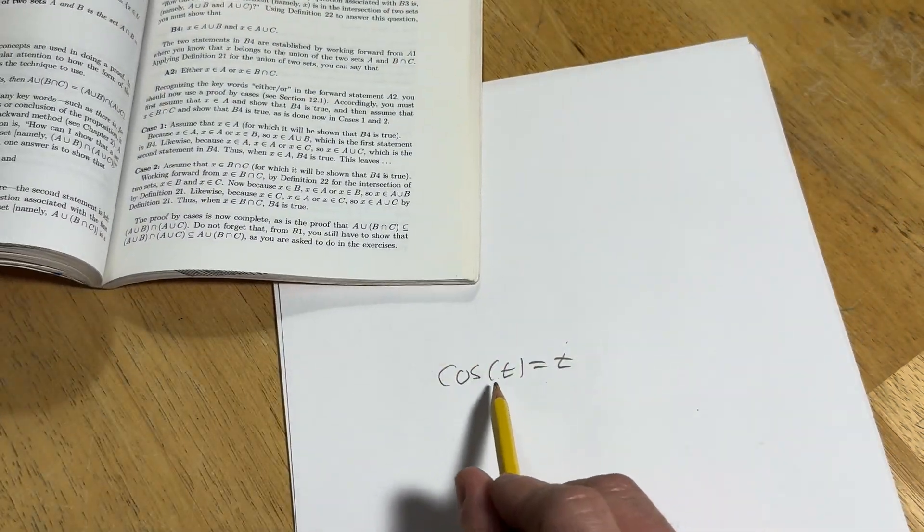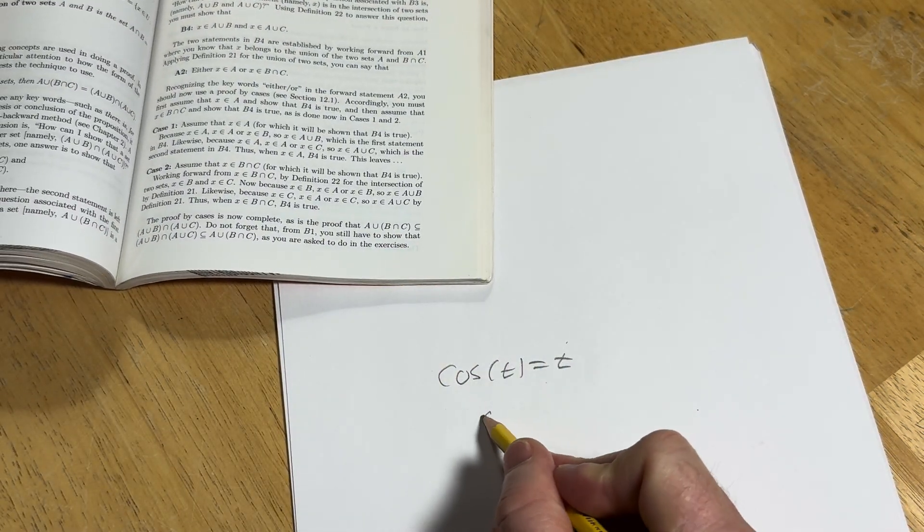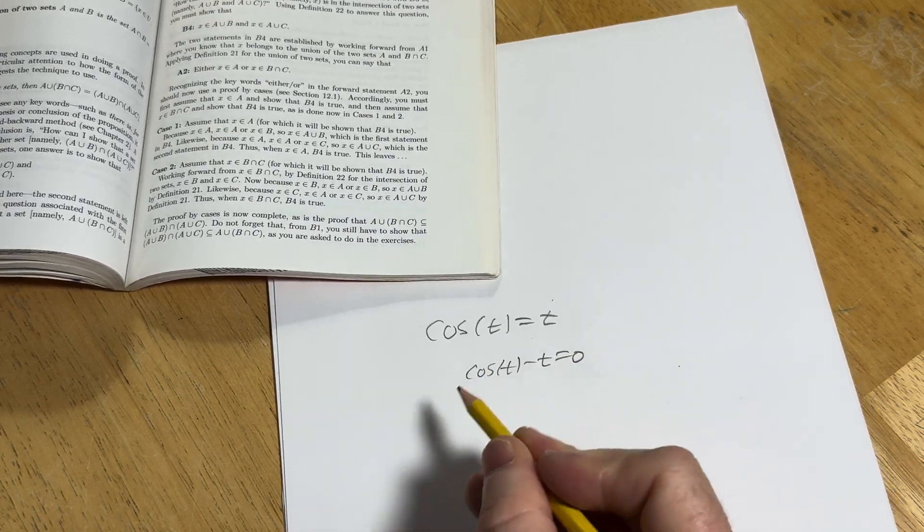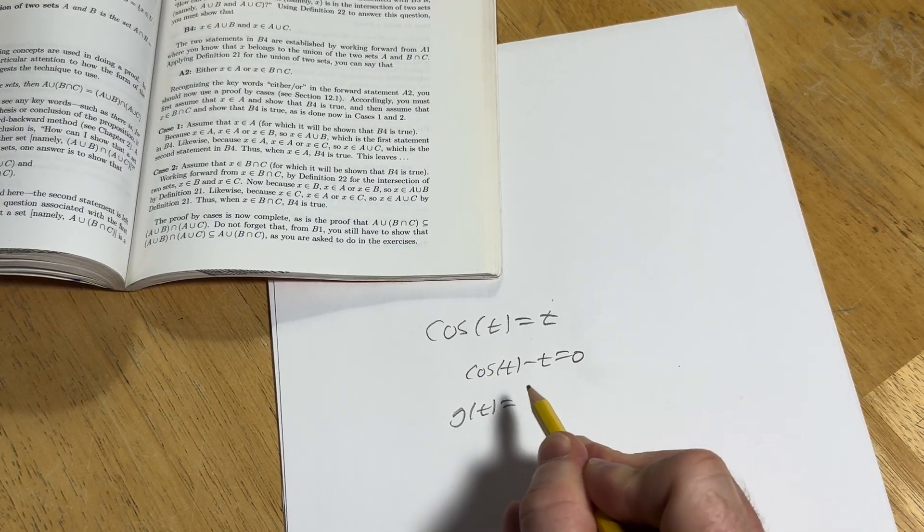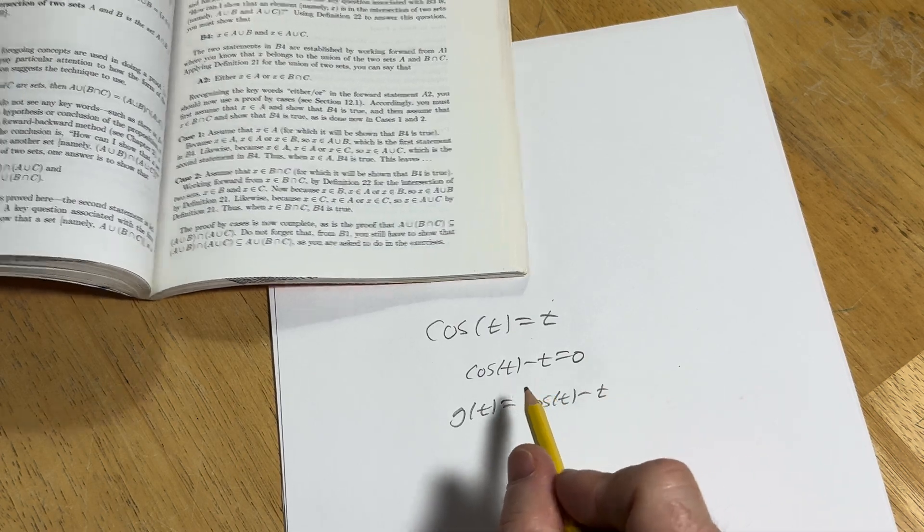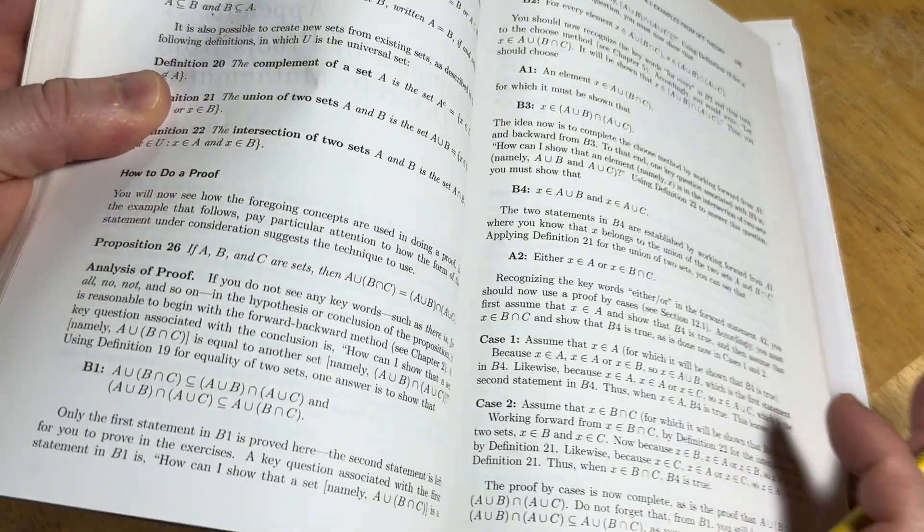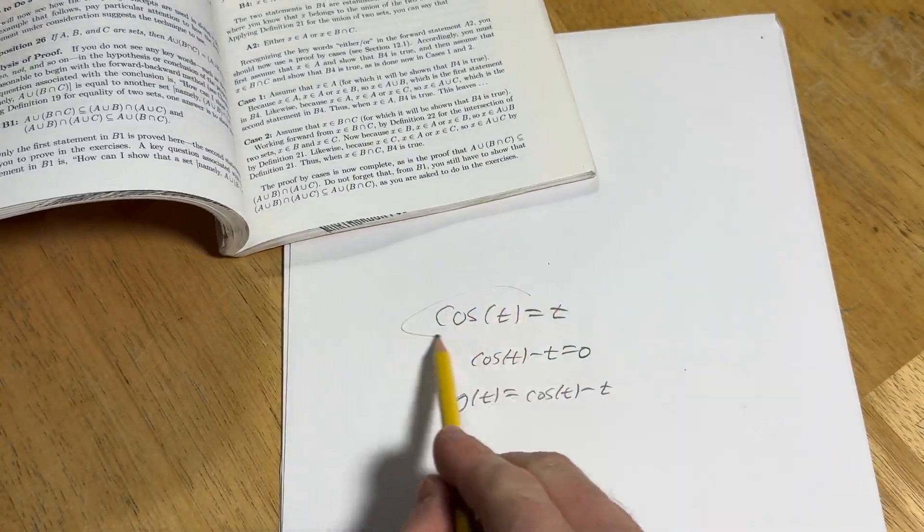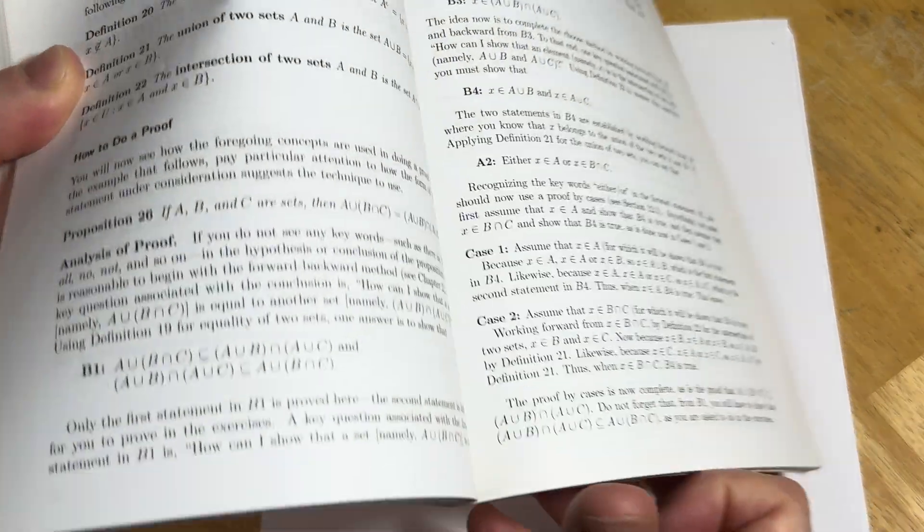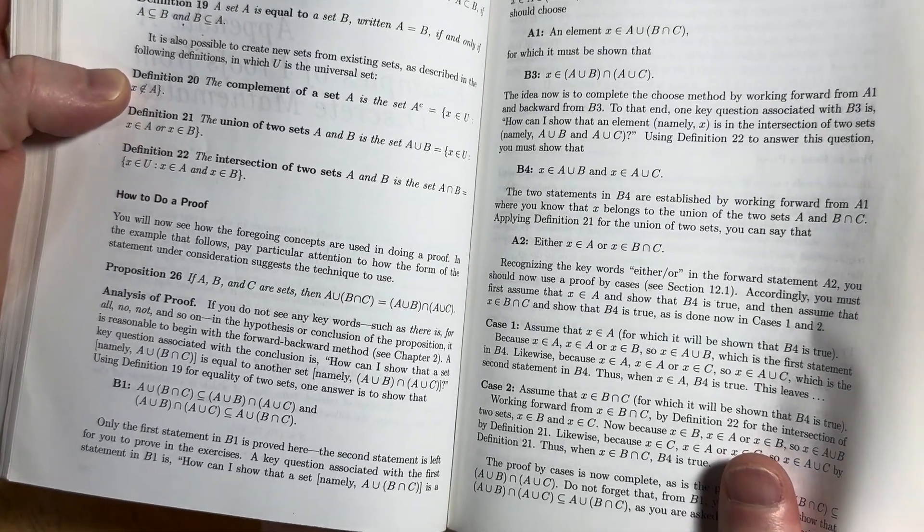And one way to approximate the value of that is basically you set it equal to 0. And I'm just going to call it g. And then you apply Newton's method to approximate the root, which is basically the point of intersection of these two graphs, which is the same thing as finding the root of this equation or 0 of this function. So, yeah.